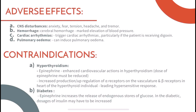For contraindications: hyperthyroidism — epinephrine has enhanced cardiovascular actions in hyperthyroidism, so the dose must be reduced if ever used. There is increased production or upregulation of alpha receptors on the vasculature and beta receptors in the heart of the hyperthyroid individual, leading to a hypertensive response. There is also diabetes — epinephrine increases the release of endogenous glucose stores, so in diabetic patients, dosages of insulin may have to be increased.